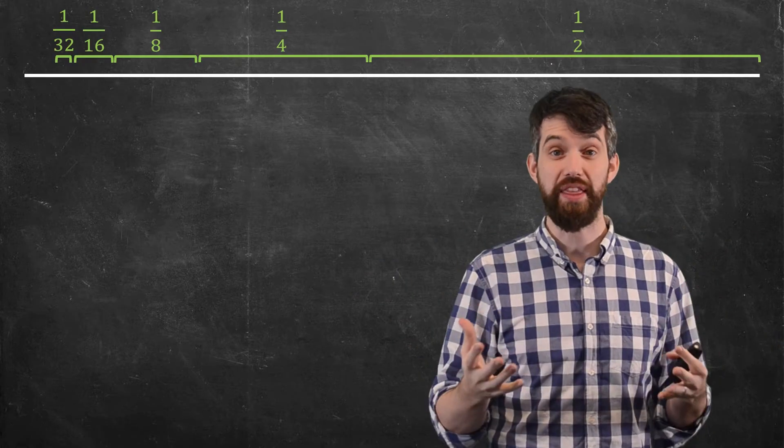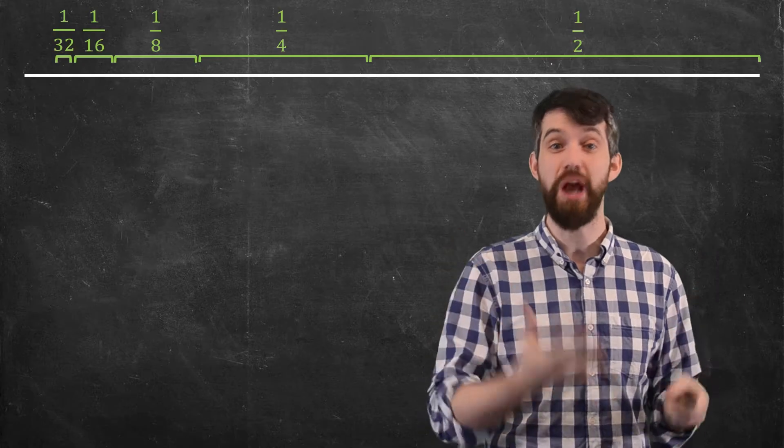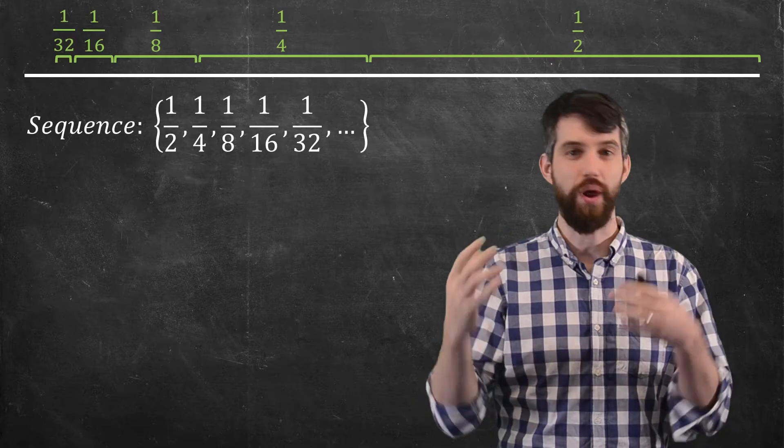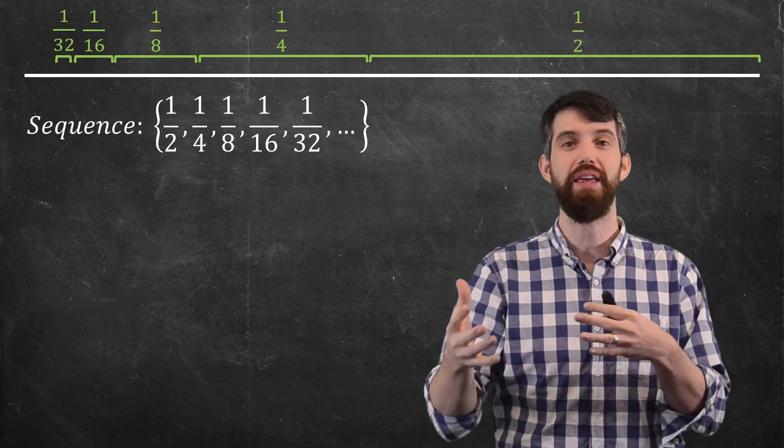Now one way to think about this is, first of all, I have a list of numbers, which is just a sequence as we've seen before. That is, I have this one-half, this one-quarter, this one-eighth, and so on.